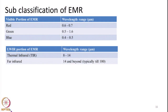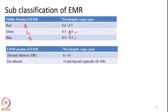The white light we get from the sun — the visible portion spanning 0.4 to 0.7 micrometers — also has three primary colors within it: red, green, and blue. We all know that the three primary colors produce white light. There is a further wavelength subdivision: blue is 0.4 to 0.5, green is 0.5 to 0.6, and red is 0.6 to 0.7 micrometers. So this is a further sub-classification of the electromagnetic spectrum.